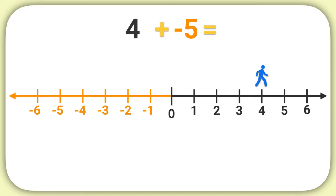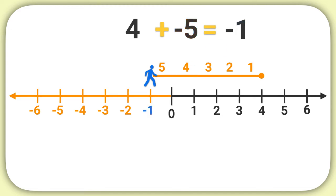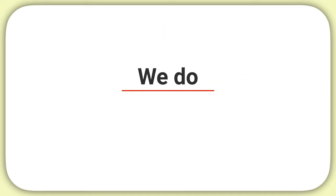They're going to walk backwards 5 spaces: 1 space, 2 spaces, 3 spaces, 4 spaces, 5 spaces. Now we can see our person is at negative 1. So 4 plus negative 5 is equal to negative 1. Now it's time for us to practice together.